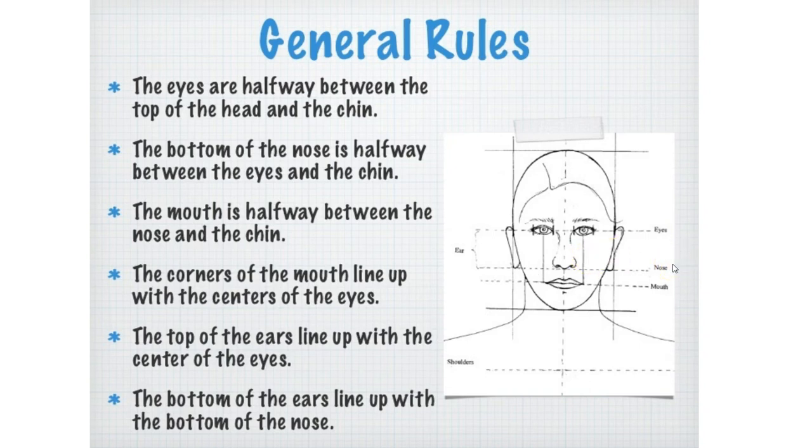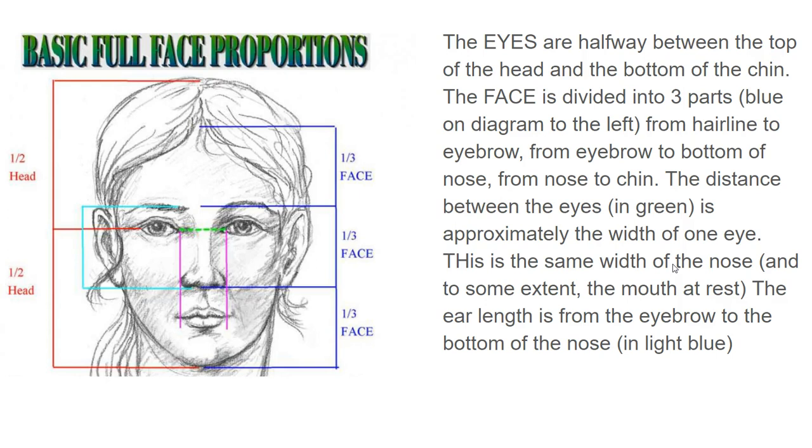The eyes are halfway between the top of the head and the bottom of the chin. The face is divided into three parts. You can see this in blue: from your hairline to your eyebrow is one-third, from your eyebrow to the bottom of your nose is another third, and from your nose to your chin is the last third.